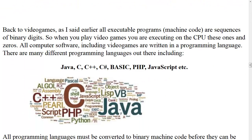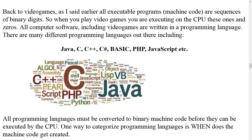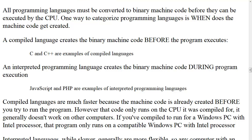Back to video games. All executable programs — the machine code — are sequences of binary digits. When you play video games, you are executing on the CPU ones and zeros called machine code. All computer software, including video games, is written in a programming language. There are many, including Java, C, C++, C#, Basic, PHP, JavaScript, and many more. All programming languages must be converted to binary machine code before they can be executed by the CPU. One way to categorize a programming language is when does the machine code get created — when is the program converted to binary?